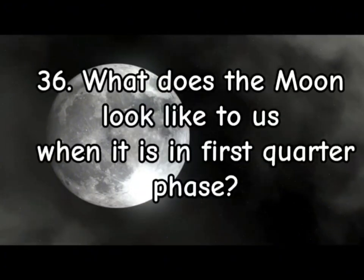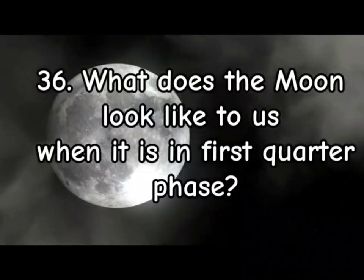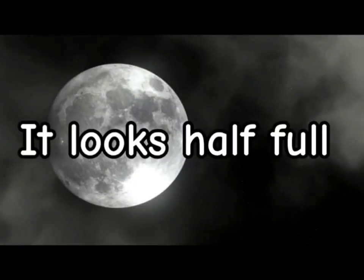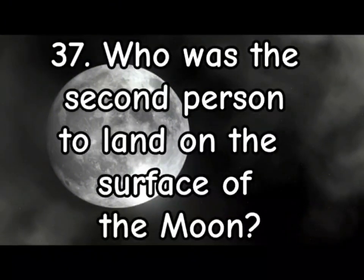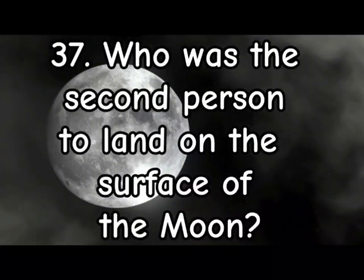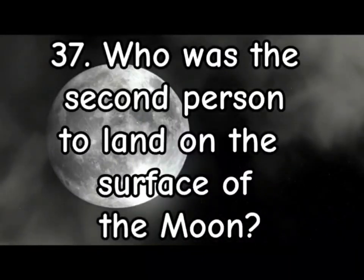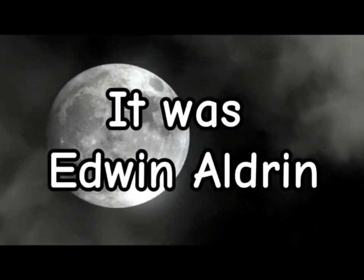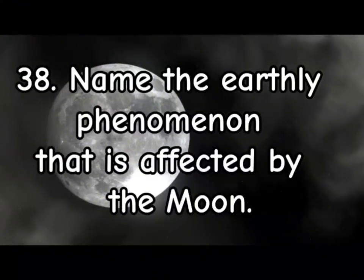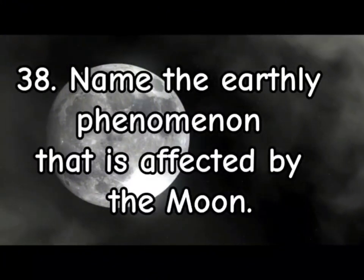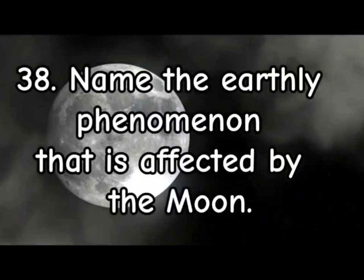36. What does the Moon look like to us when it is in first quarter phase? It looks half full. 37. Who was the second person to land on the surface of the Moon? It was Edwin Aldrin. 38. Name the earthly phenomenon that is affected by the Moon. Tides.